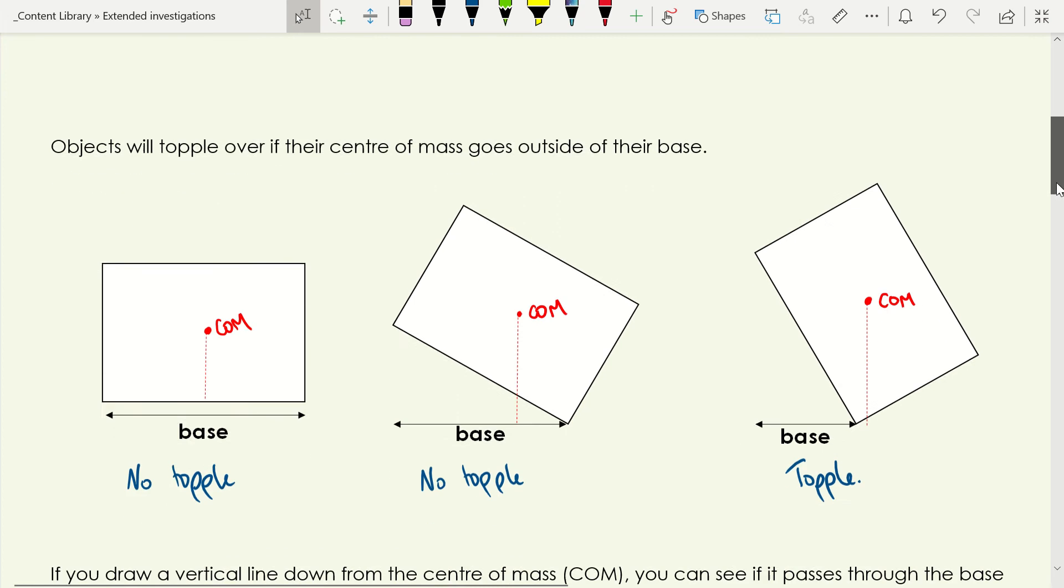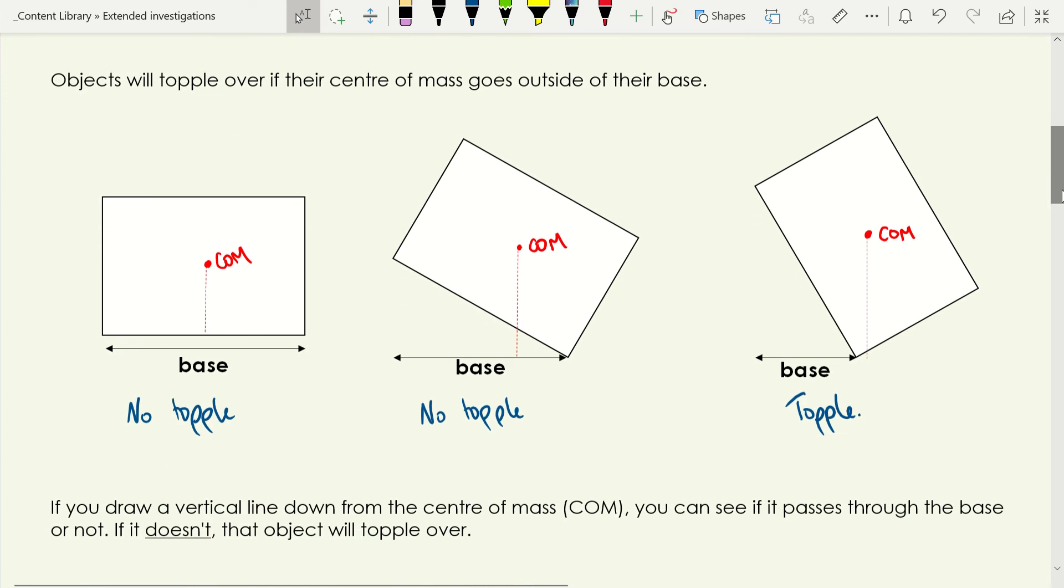We were looking at the point when an object will topple over. The reason we're interested in center of mass is something will topple over if the center of mass goes outside the object's base. If we have an object that's just sitting down here, you can see its center of mass is over its base and it won't topple over. If we lift it up just a little way, we can see the center of mass is still directly over the base. If we tip it far enough though, its center of mass can go outside the base and this will fall over. That's what is happening when your bottle falls over, your center of mass has gone outside your base.